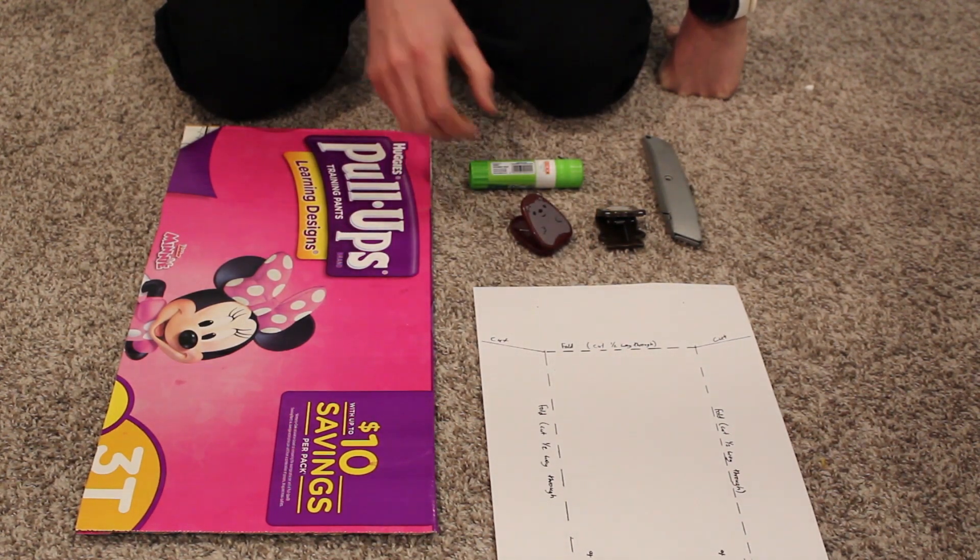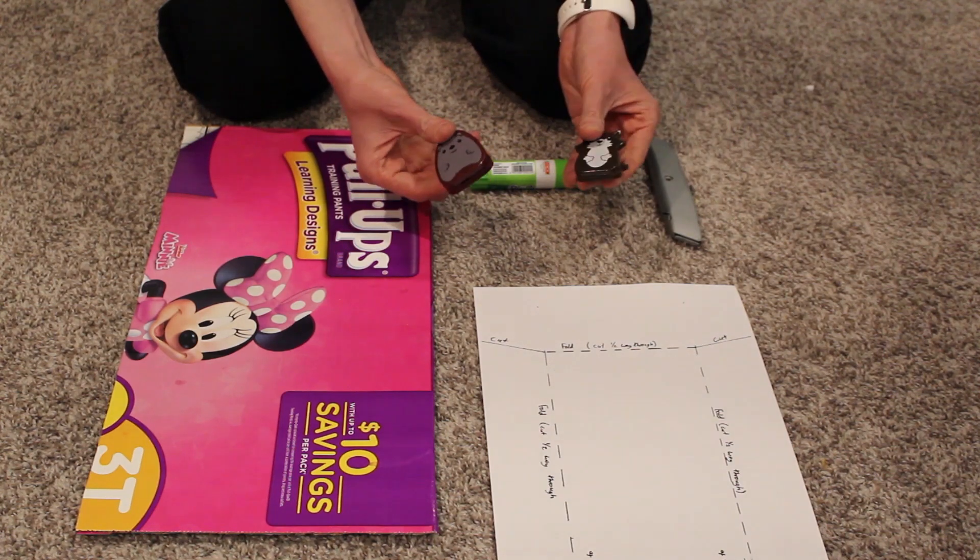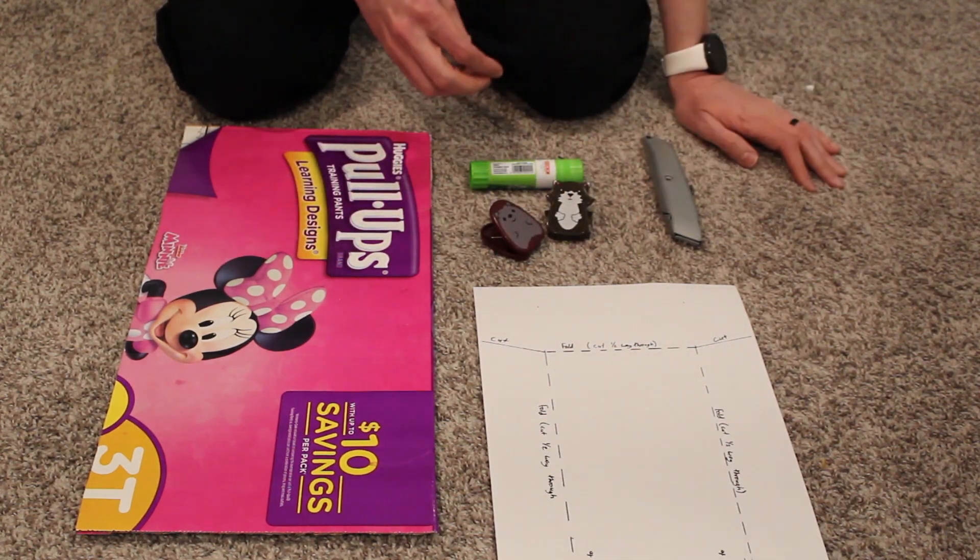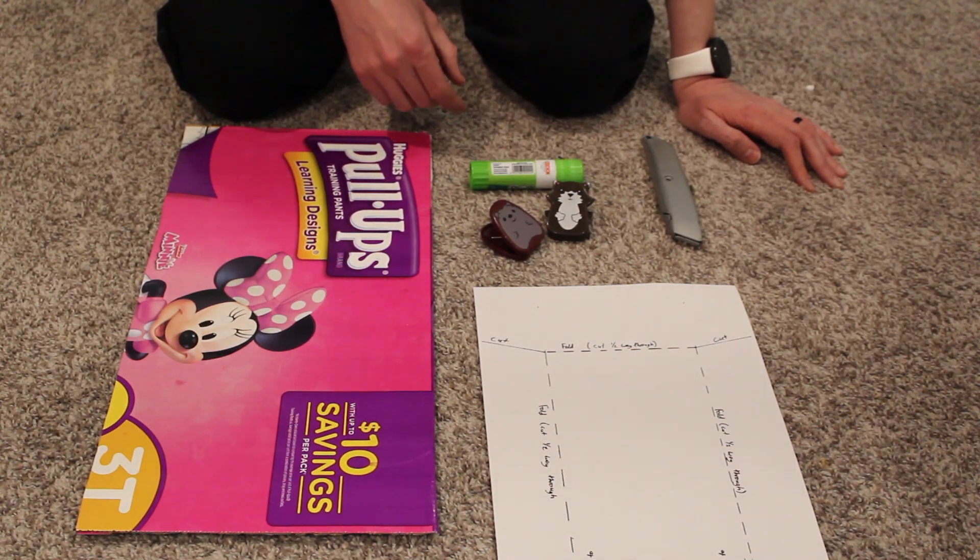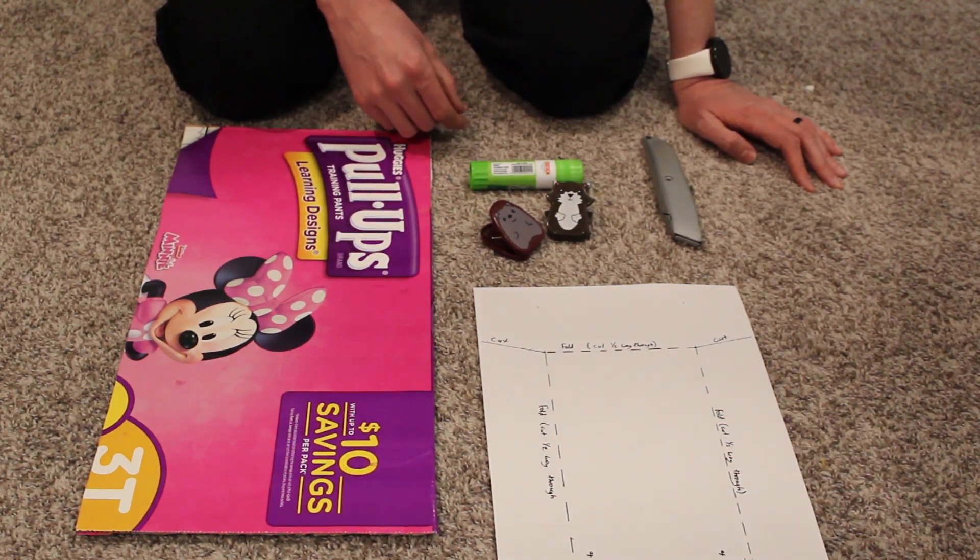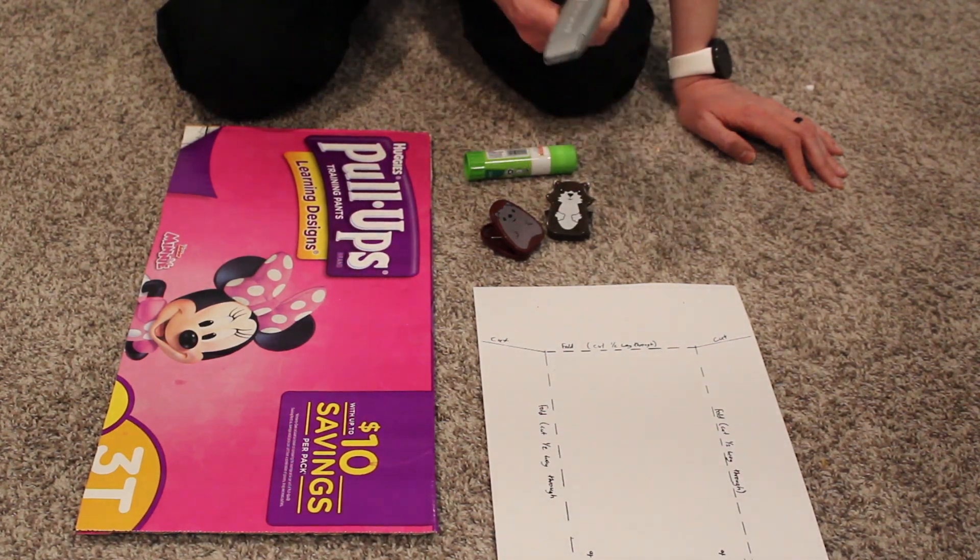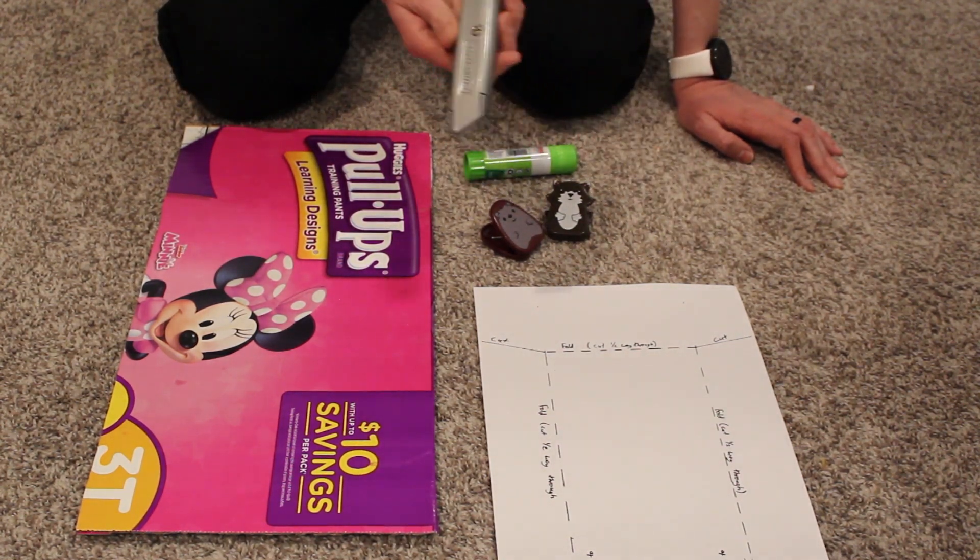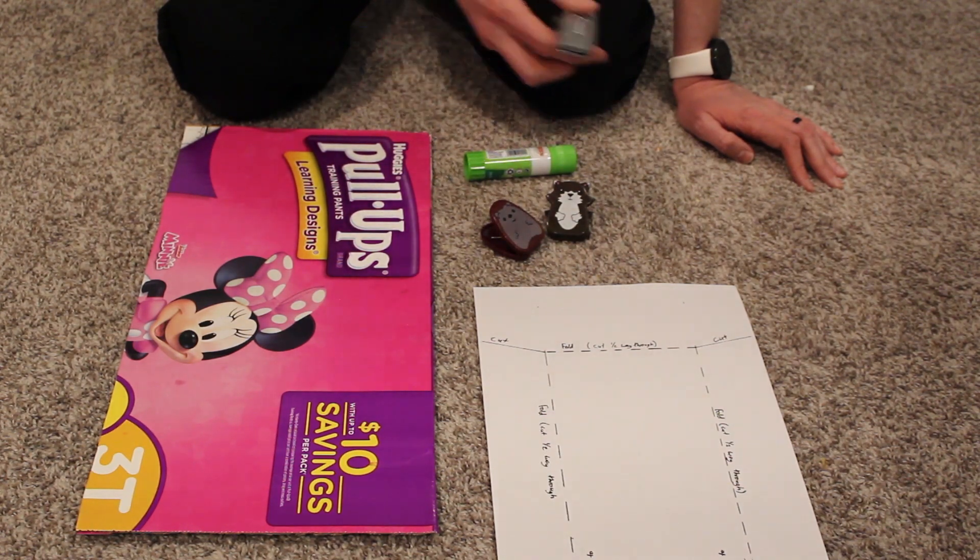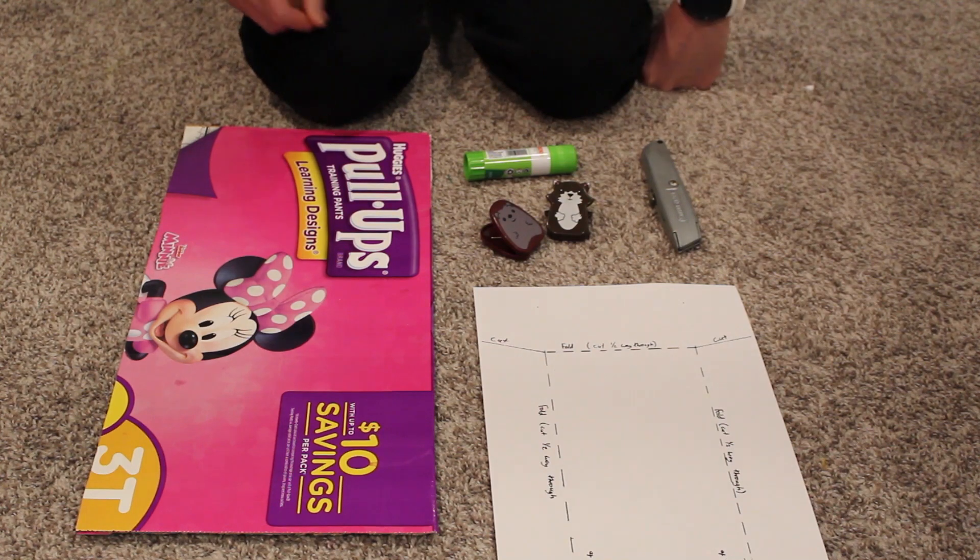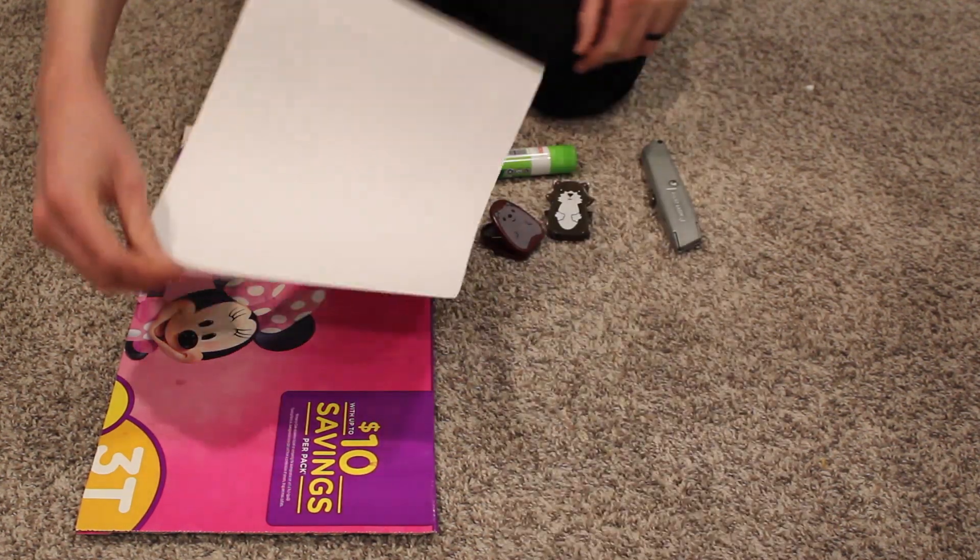You'll need a couple of chip clips or binder clips or clothespins—you'll see what you're using this for later. Glue is handy to hold the template to the box, and then a box cutter. I recommend getting a fresh blade because it'll slice through quite nicely; otherwise it's a pain and dangerous.